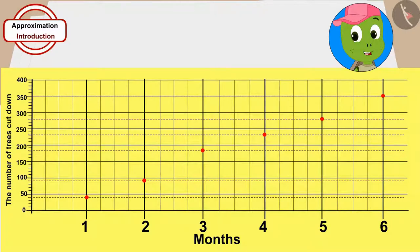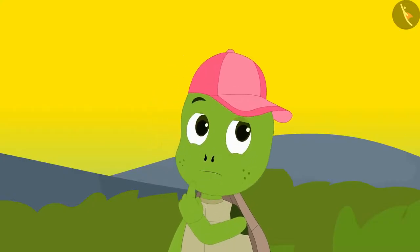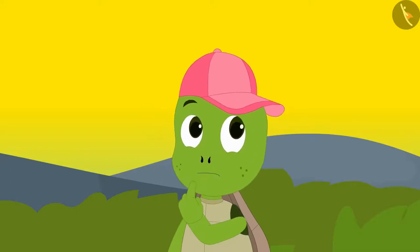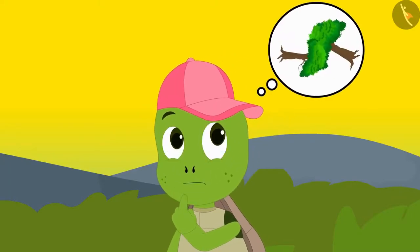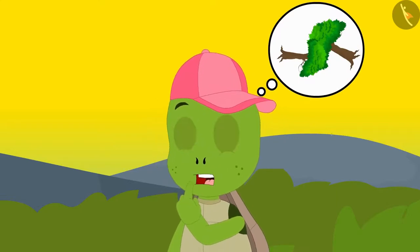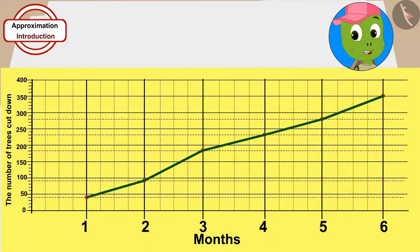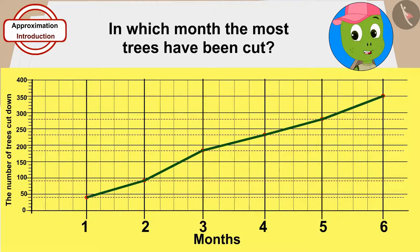Six months have passed. This is a very serious problem — so many trees are cut every month. But in what month have the most trees been cut down? Children, by looking at this chart, can you tell in which month the most trees have been cut?